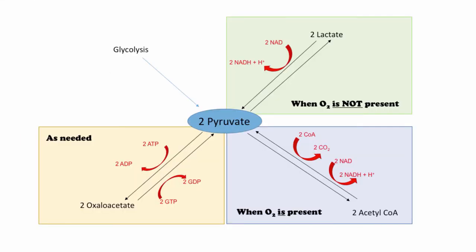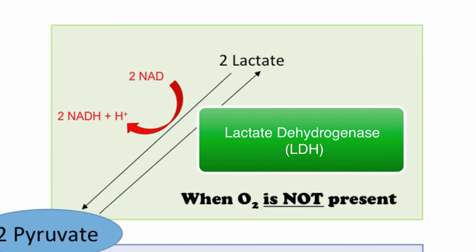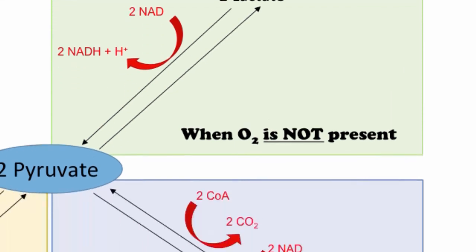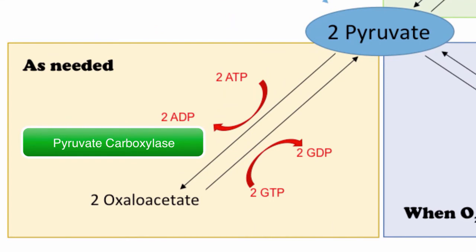These last steps are not necessarily a part of glycolysis or a part of the Krebs cycle, but they are all important steps that determine where the product of glycolysis goes. The enzyme responsible for turning pyruvate into lactate when oxygen is not present is lactate dehydrogenase. The enzyme responsible for turning pyruvate into acetyl-CoA when oxygen is present is pyruvate dehydrogenase. And the enzyme needed to convert pyruvate into oxaloacetate is pyruvate carboxylase.